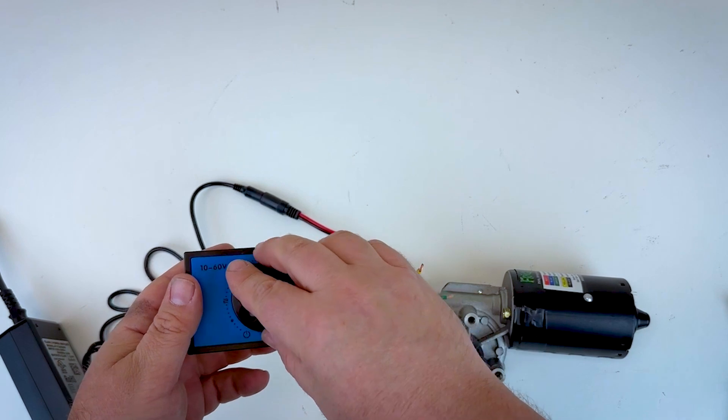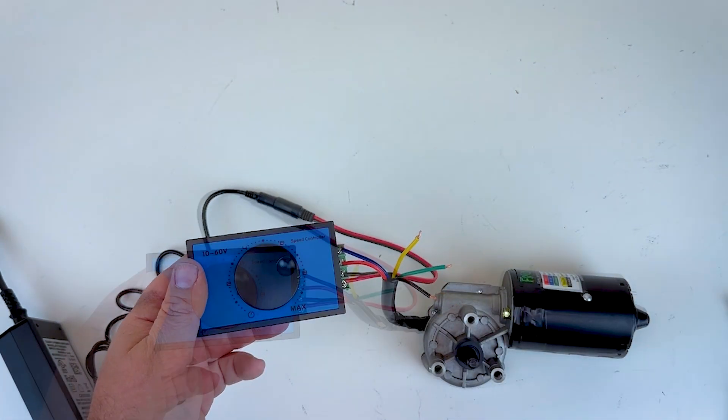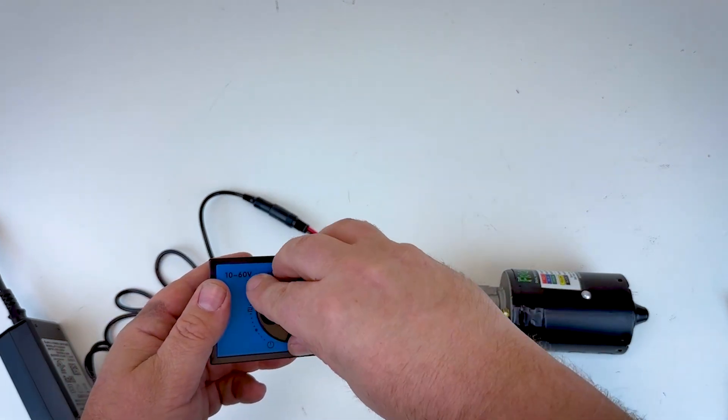Once that's plugged in we can go ahead and turn the speed controller up and the motor shaft will start spinning. Let's go ahead and install the motor arm onto the motor shaft here so you can see it a little better. Turn that off.